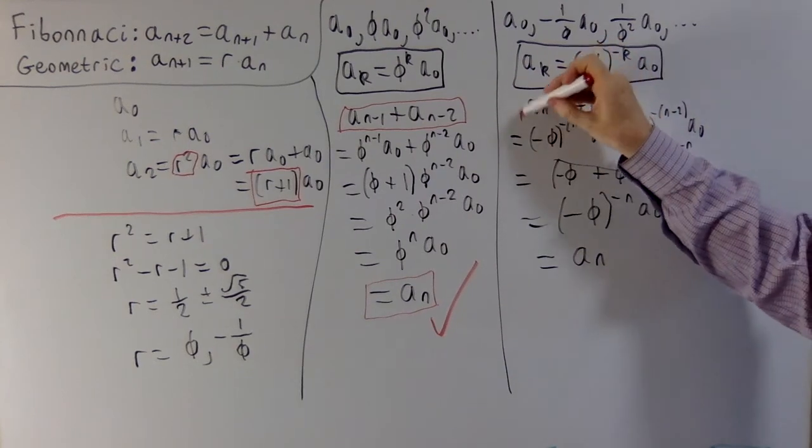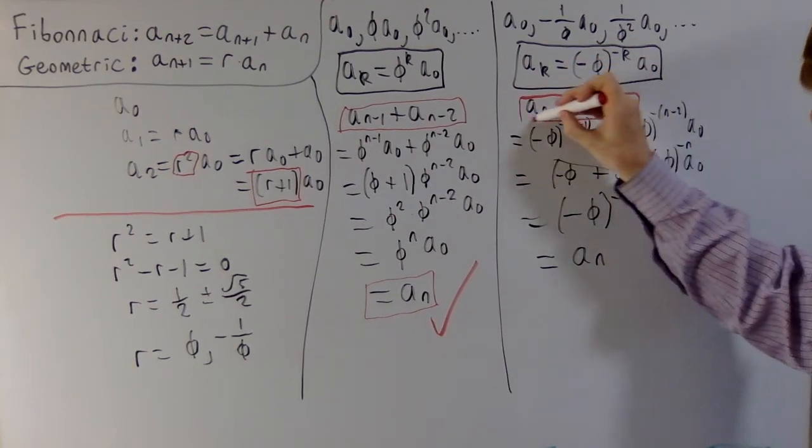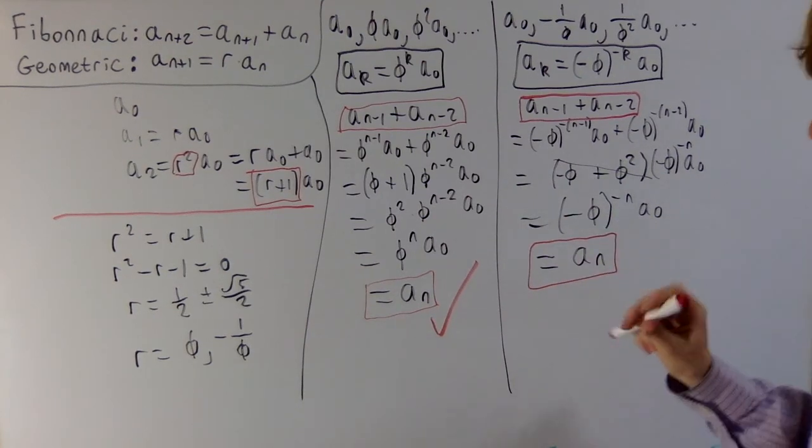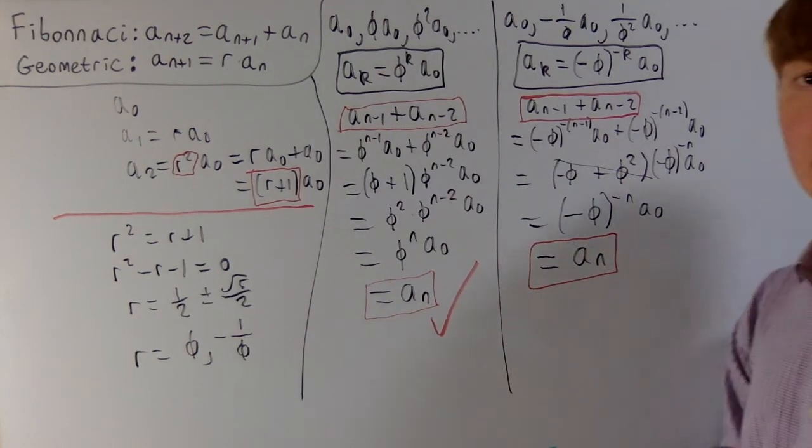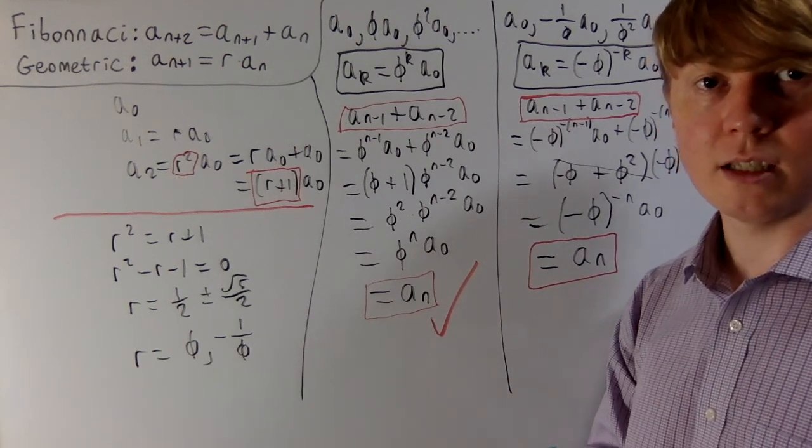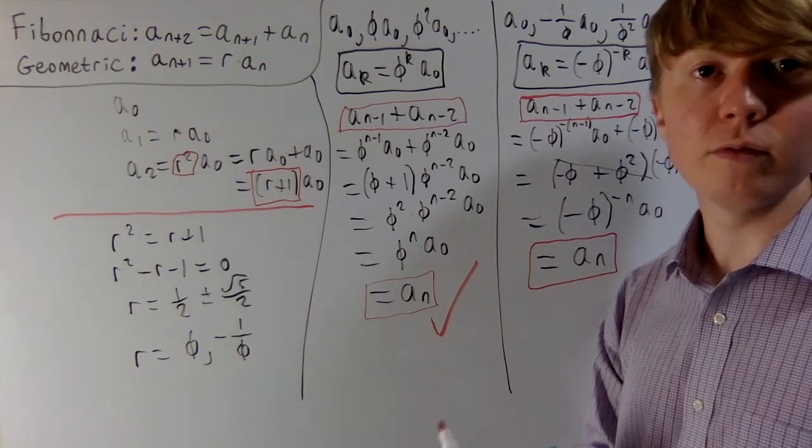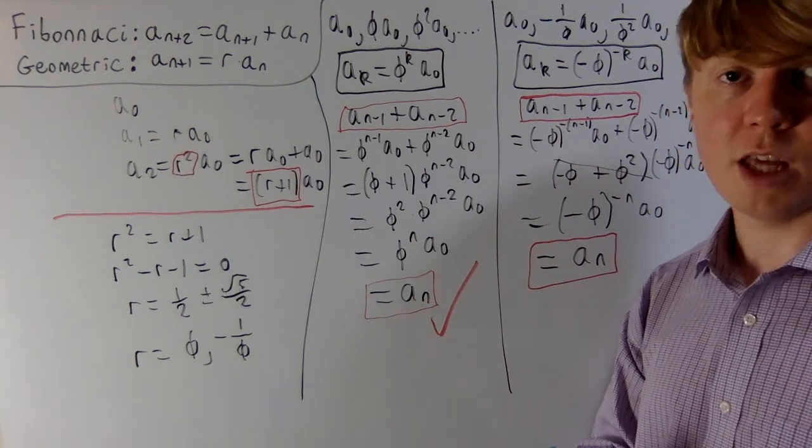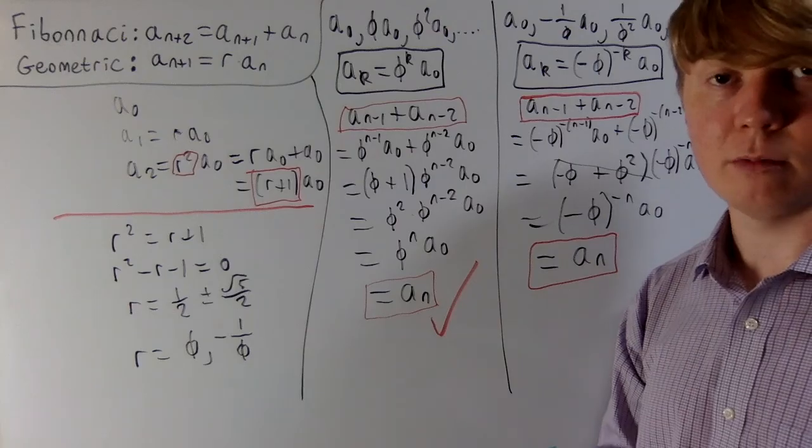So you've shown that you start with any two terms, a n minus 1 and a n minus 2. The sum of these two consecutive terms gives you the next term. So there you go. We've actually managed to find two non-trivial examples, really nice examples, sequences that are both geometric and Fibonacci. It's just another of these instances in maths where the golden ratio seems to appear out of nowhere in a problem.